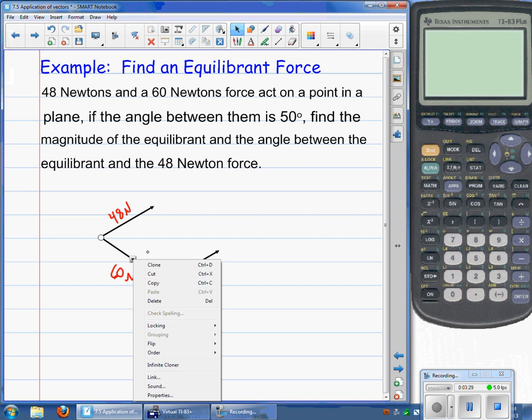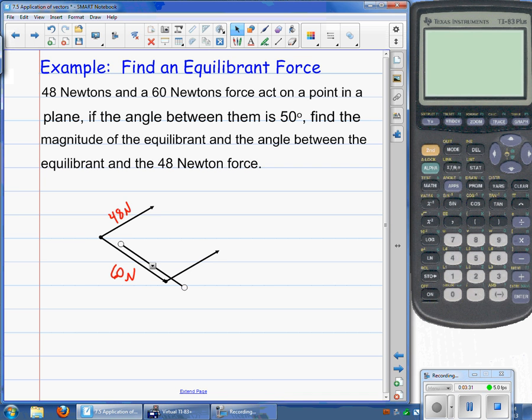So we'll tail to tip with each vector. And then if we draw in the diagonal of the parallelogram from the initial point across, we should be looking at the resultant of those two vectors. So we're going to give that one a name. We're going to call that V.